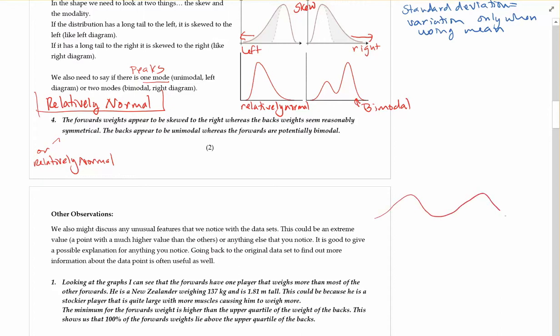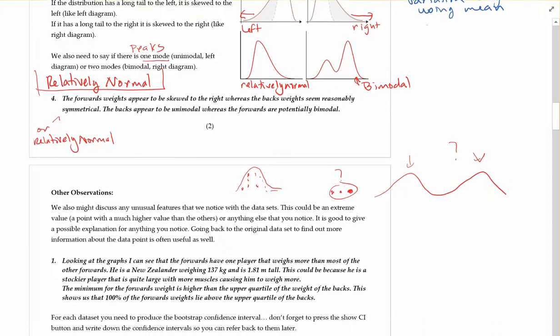So if you had a graph that looked like this. It might be interesting to say why there are two peaks. Or if you have a graph and then you've got a single point or a cluster of points really far away. And everything else is stacked in. Then you might want to say those are also unusual. So other observations kind of go with unusual features.